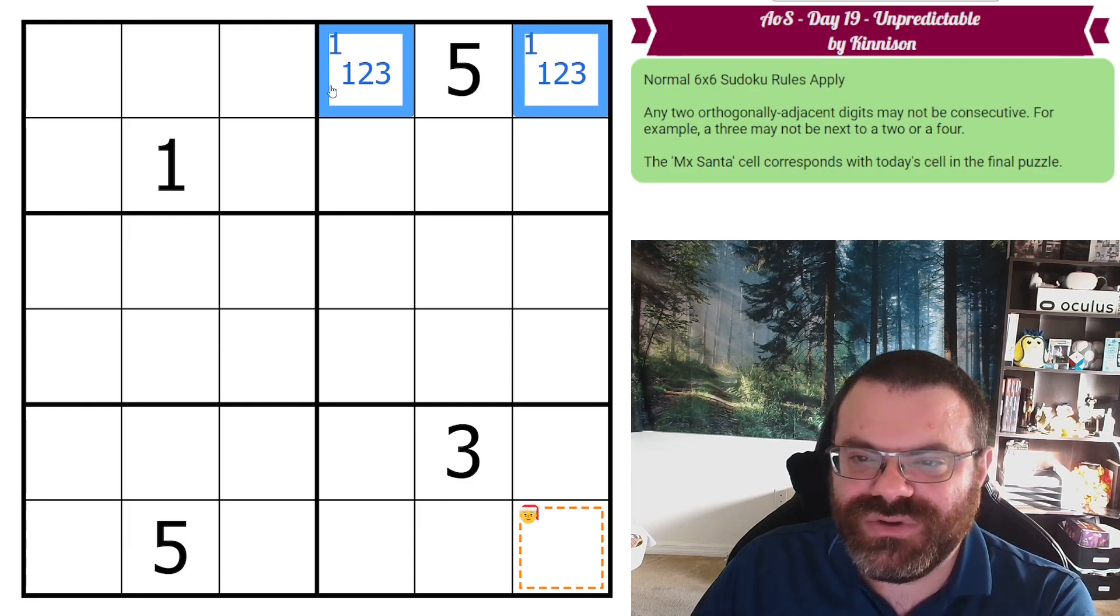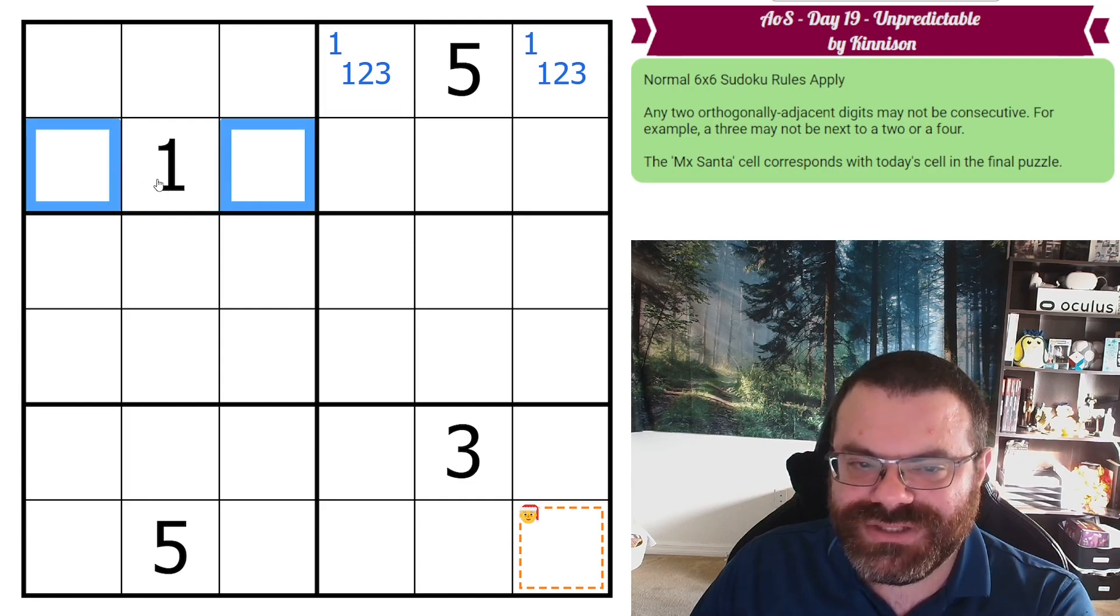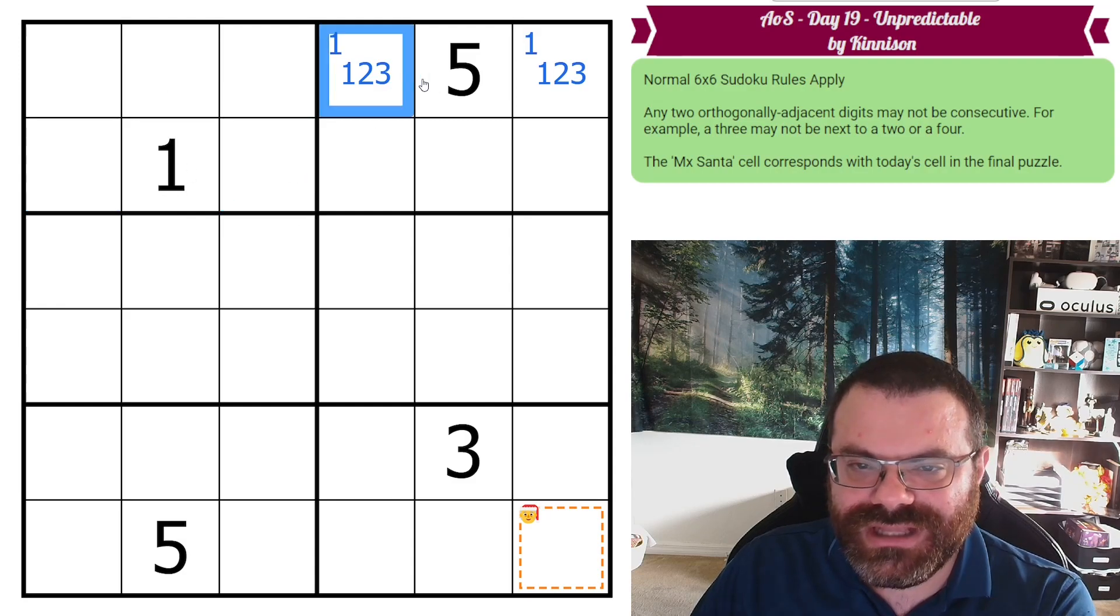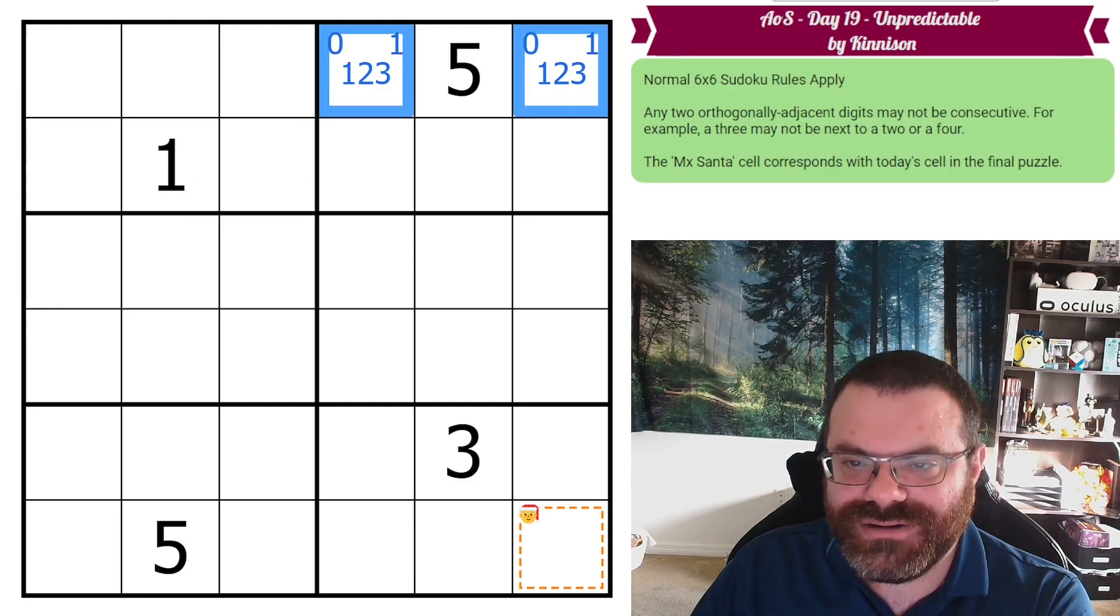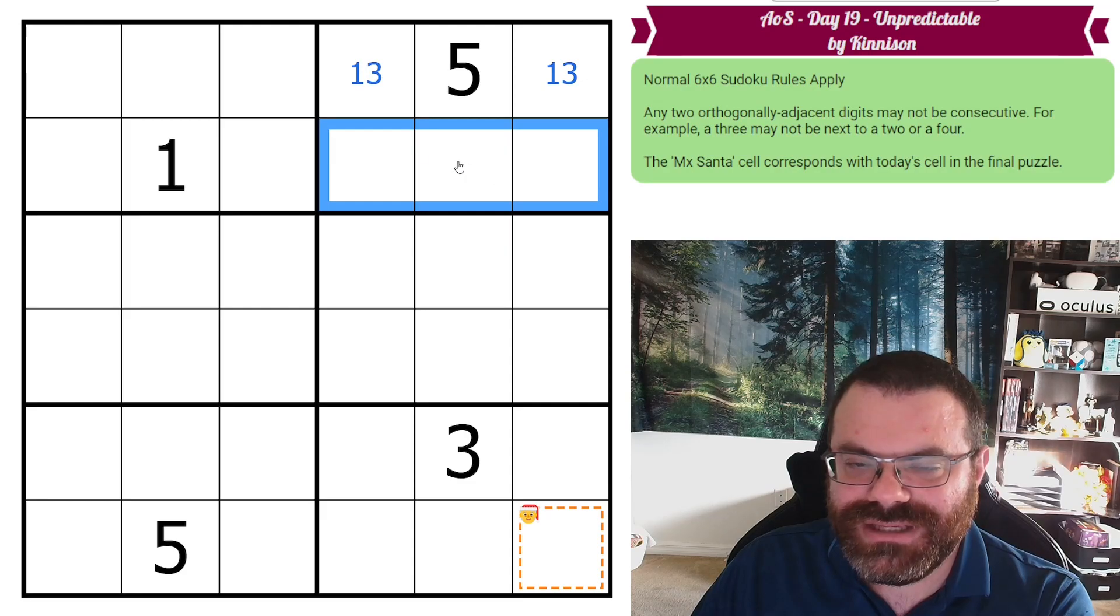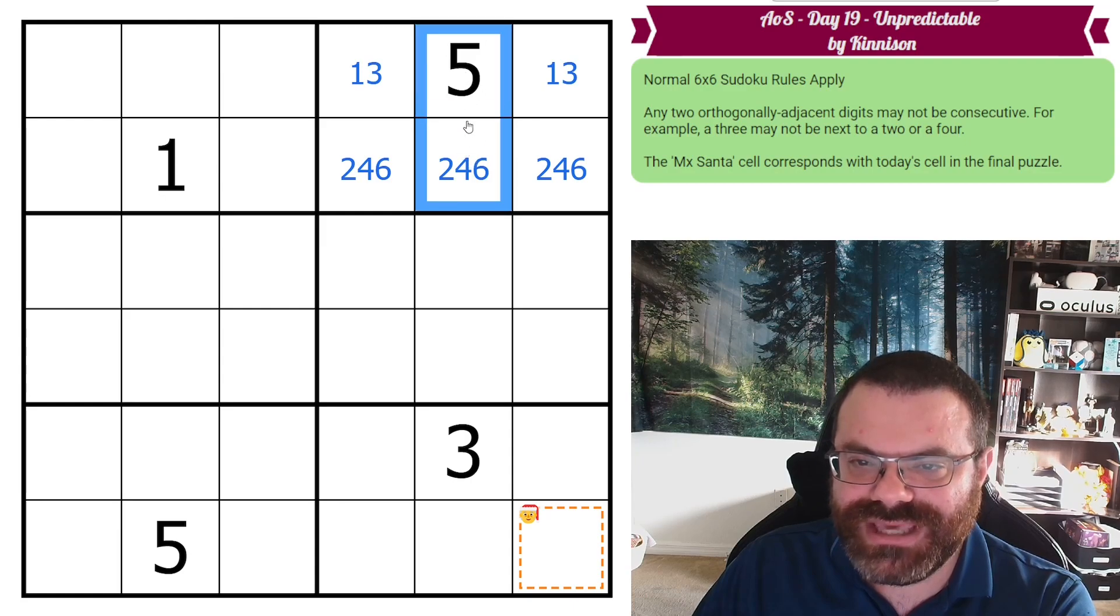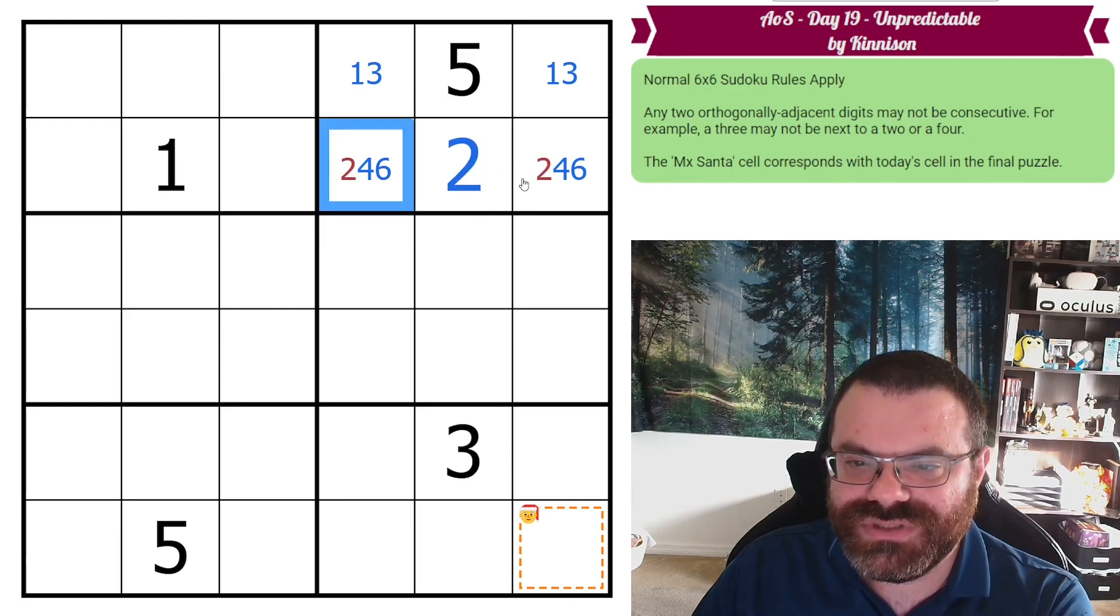Now what would happen if we actually did a 1 and a 2 though? Well now we'd have to put a 2 down here, but there can't be a 2 down here because it would be next to the 1. So actually, this is going to be a 1-3 pair. Let me just fix my notation here. This is going to be a 1-3 pair, and then this is going to be the remaining digits, 2, 4, and 6, but the 4 and the 6 still can't go next to the 5, so the 2 is placed.